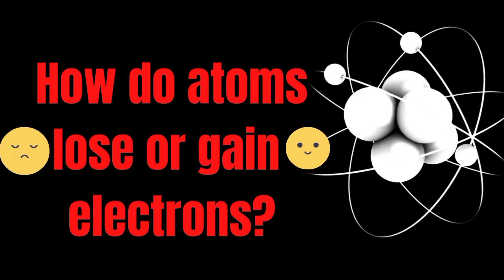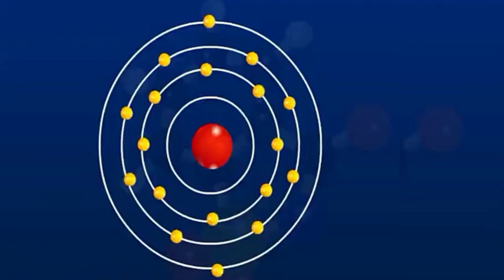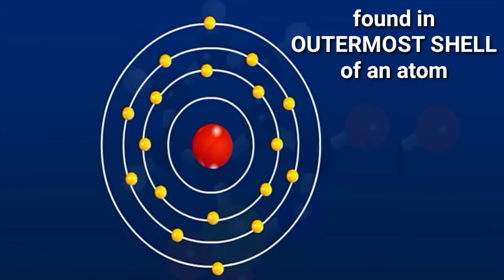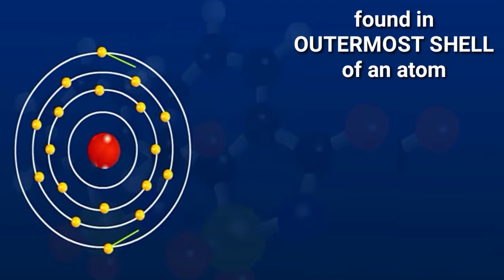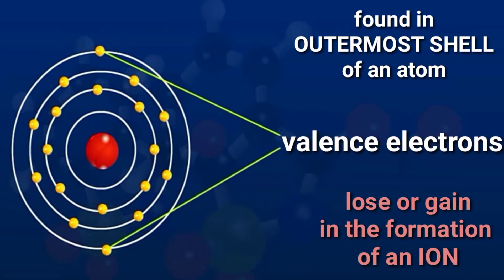In an atom, electrons orbit around a nucleus. The valence electrons are the electrons found in the outermost shell of an atom. These are the electrons that are lost or gained in the process of forming ions.